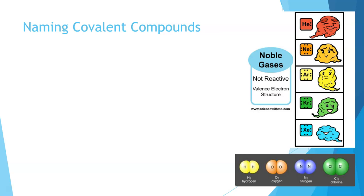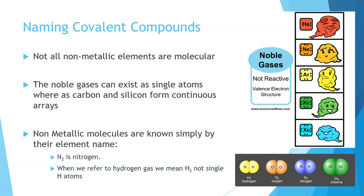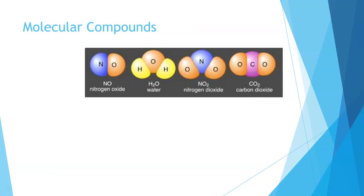When we name covalent compounds, they have different rules for naming than our ionic compounds. Noble gases exist as single atoms, and they're just named after the atom that they are. Our halogens form diatomic molecules, and again, these are just chlorine, nitrogen, oxygen, hydrogen. So we just know them by their name.